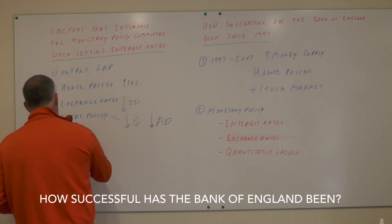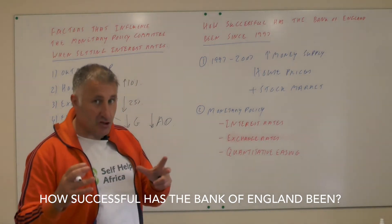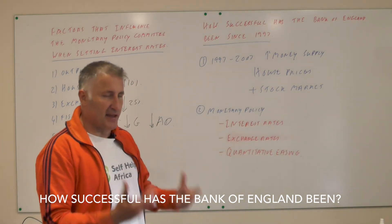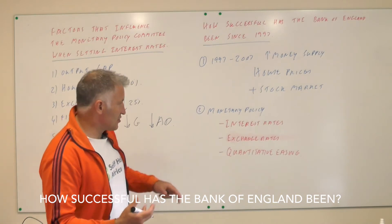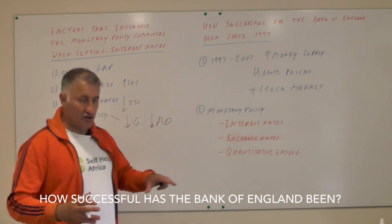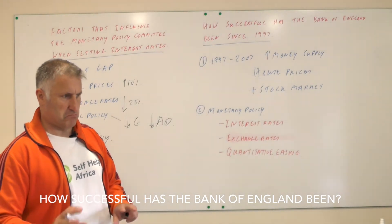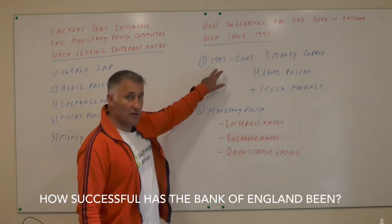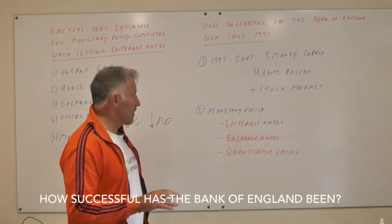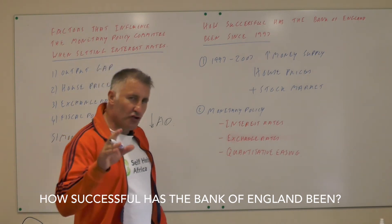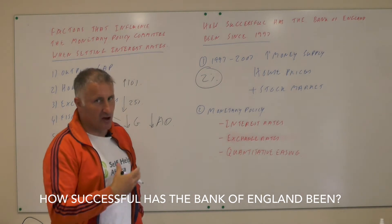Another factor is the money supply — how much money is circulating in the economy, which largely comes from banks lending. If banks lend out lots of money, the money supply is increasing rapidly. The government has also been using quantitative easing, effectively printing money, which also increases the money supply. If the money supply is rising, that's likely to increase inflation. Between 1997 and 2007, we had price stability — roughly two percent inflation — because house prices and share prices were not included in the definition of inflation.